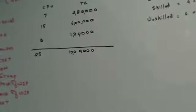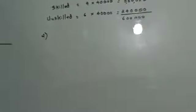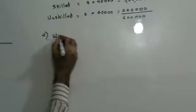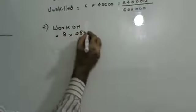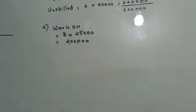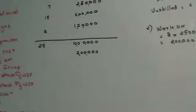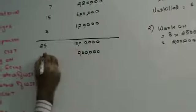Working note 2: work overheads is 8 rupees per machine hour and the machine has worked for 25,000 hours. So 8 into 25,000 equals 2,00,000. Work overheads and factory overheads are the same thing, so factory overheads is 2 lakhs. Divide TC (2 lakhs) by 40,000 units to get CPU of 5.